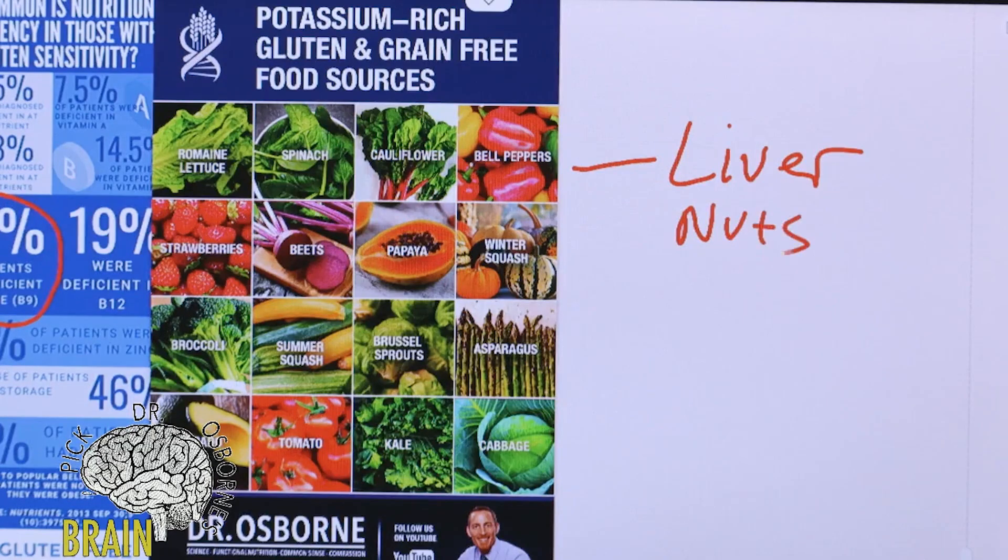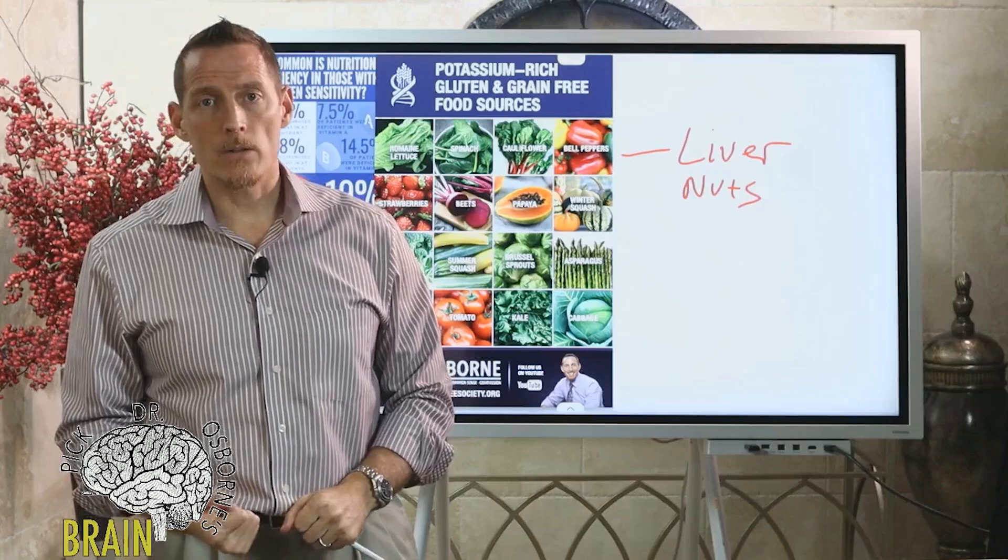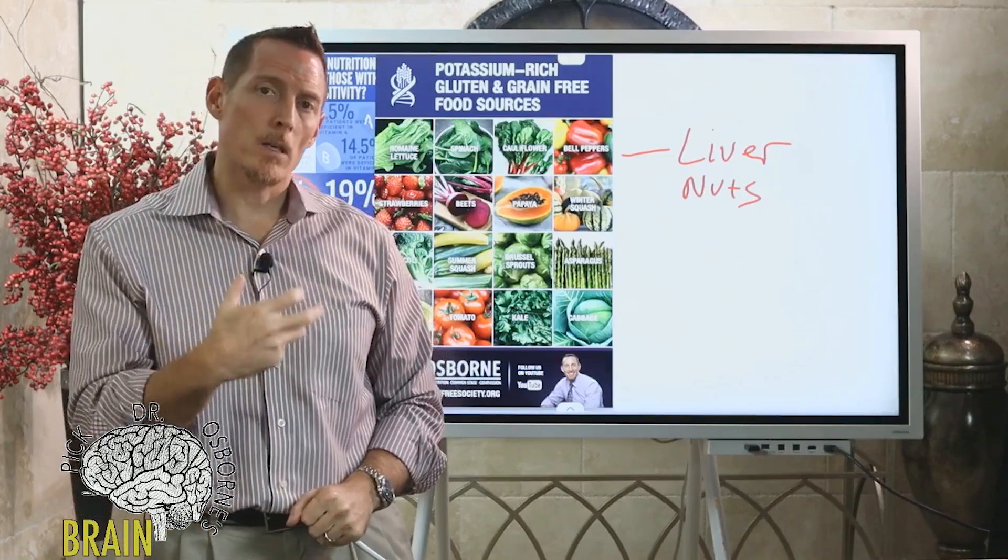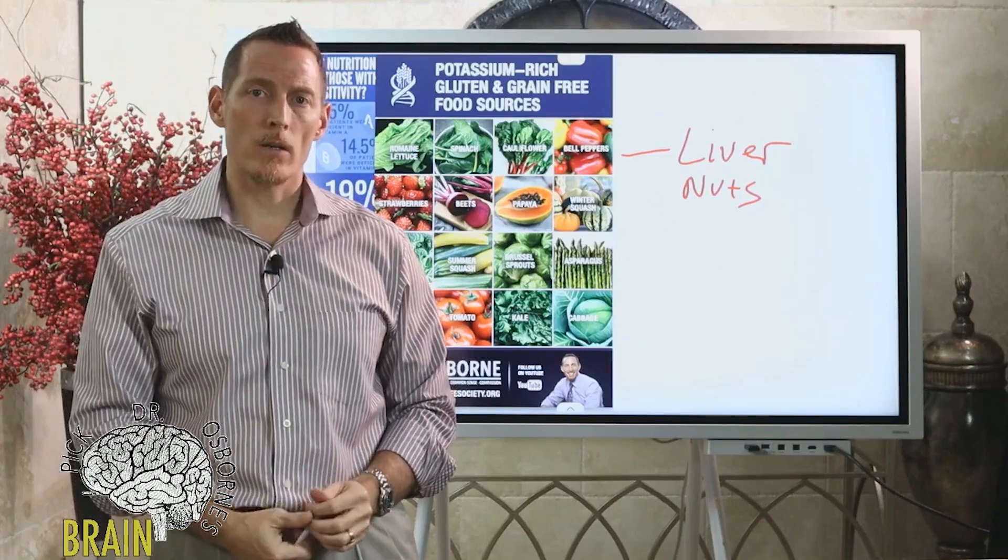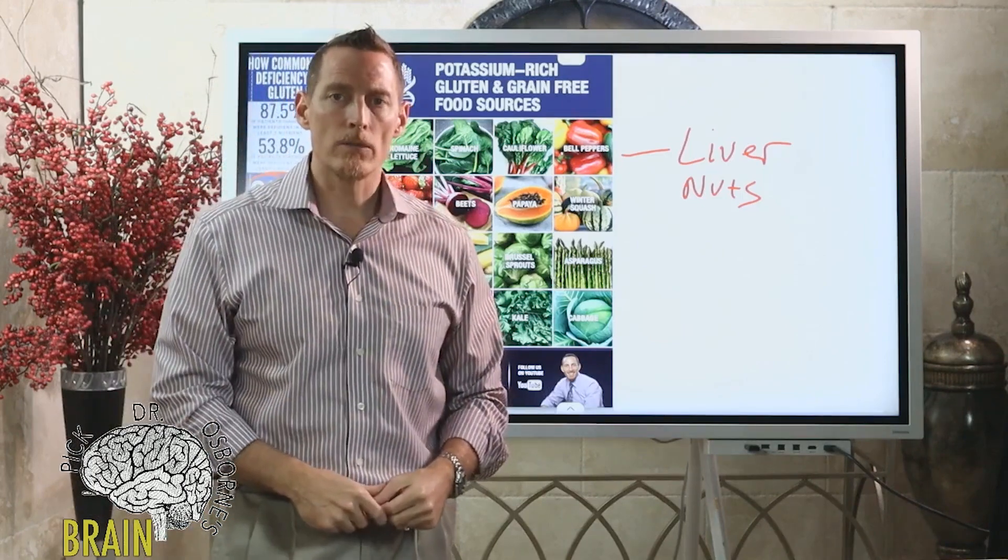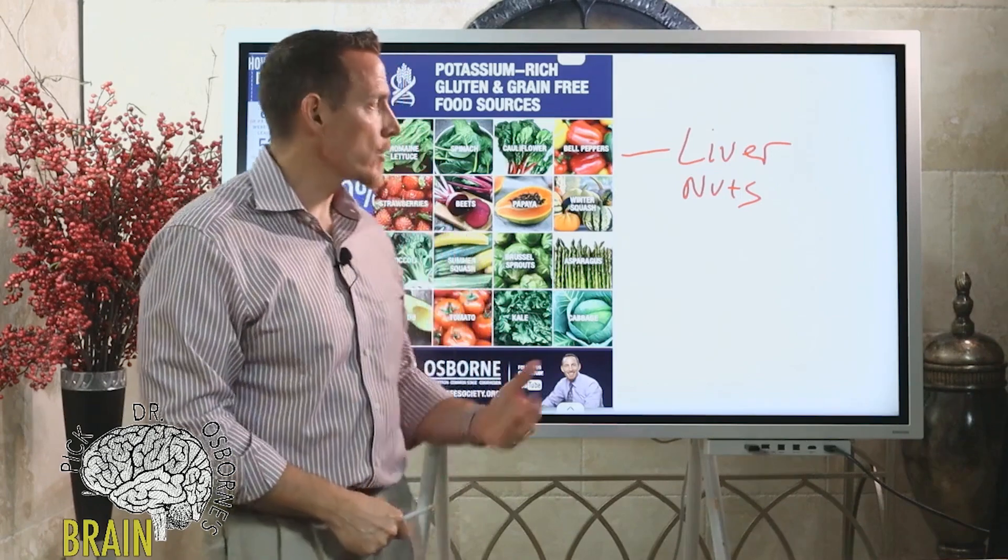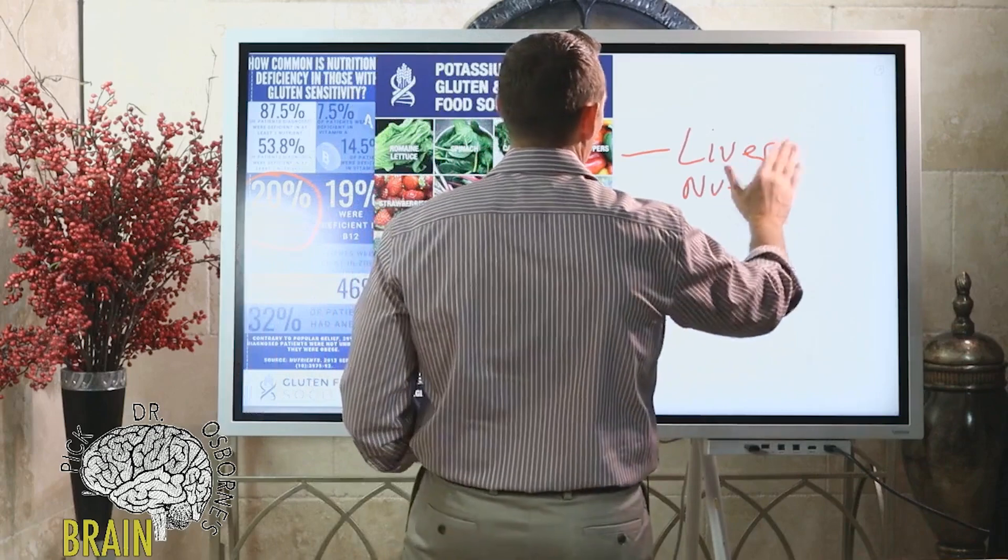You can also get folate from nuts as well. These are just other sources of folate. A number of different dietary sources, but just remember if it's green it's got a lot of folate in it. If you're not a big green eater, you need to consider nuts and potentially liver in your diet to make sure you're getting adequate levels of folate.